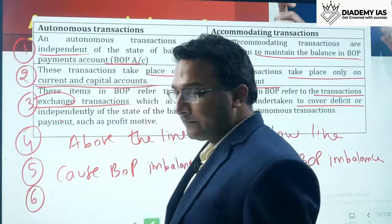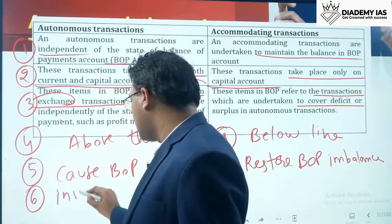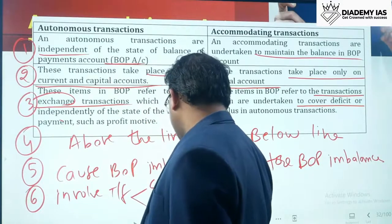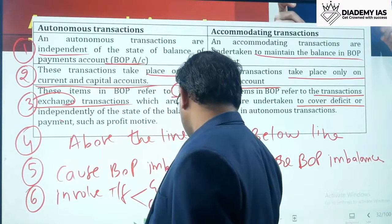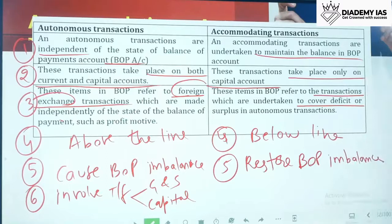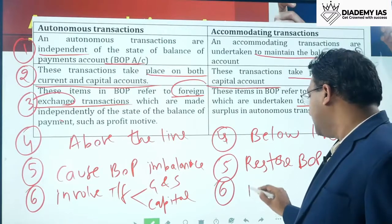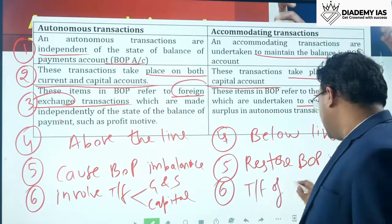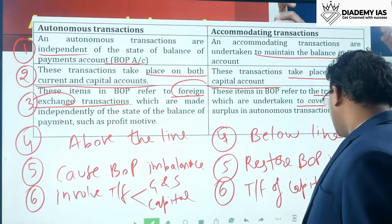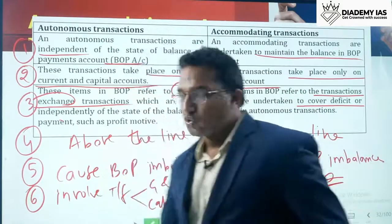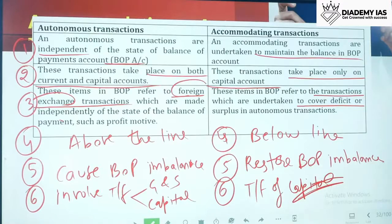Autonomous transactions involve transfer of goods and services and capital across the border. In accommodative transactions, there can be transfer of capital — for instance, if India has to borrow from outside, use SDRs, or use reserve tranches. This is the major difference between autonomous and accommodating transactions.